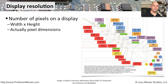Regardless of the type of display you have, one important specification is the resolution of the display. This is usually represented by the width — the number of pixels wide — versus the height — the number of pixels high. This is really referring to pixel dimensions: the total number of pixels in each direction, regardless of the physical size of your screen.